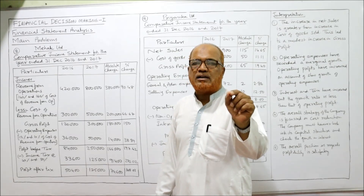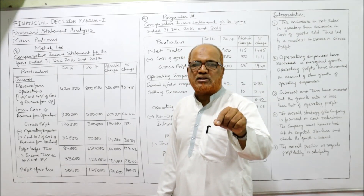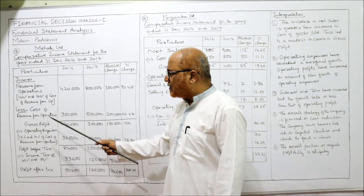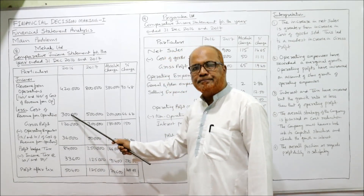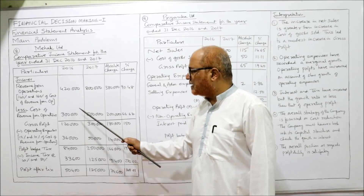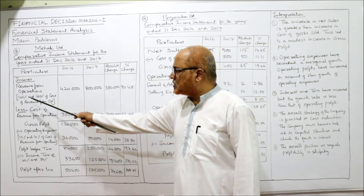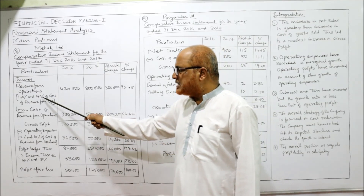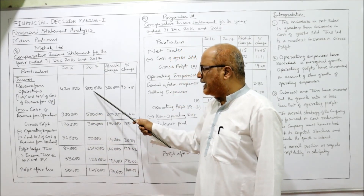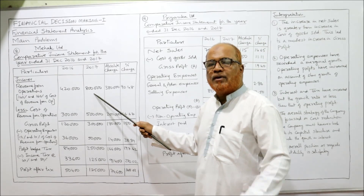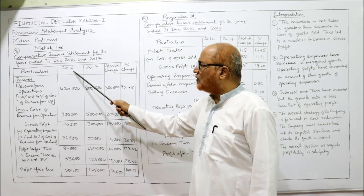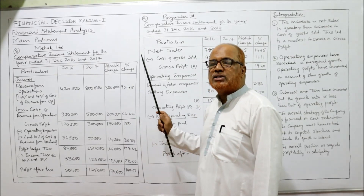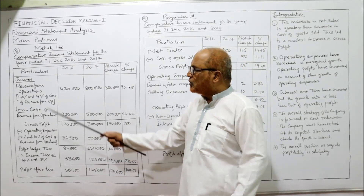Revenue from operations is given as 140% and 160% of the cost of revenue from operations. Cost of revenue from operations is 3 lakh last year and 5 lakh current year. So 140% of 3 lakh = 4,80,000 and 160% of 5 lakh = 8 lakh. We fill up the data for last year and current year first, then calculate absolute change and percentage change.